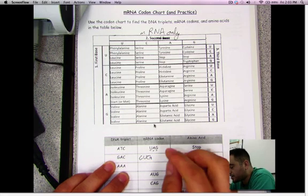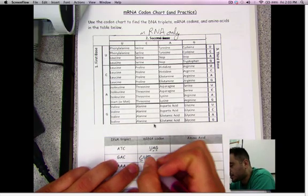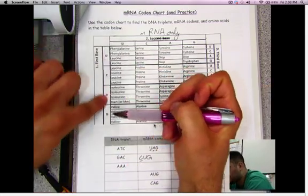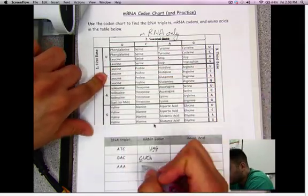So here's our codon: CUG. Now let's look at our chart. The first base is C, so look where it says first base over here. First base is C, so I'm on this row, okay?